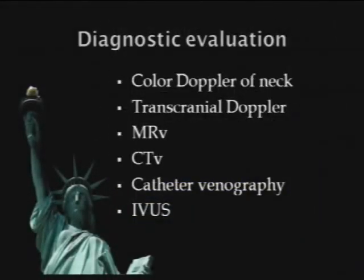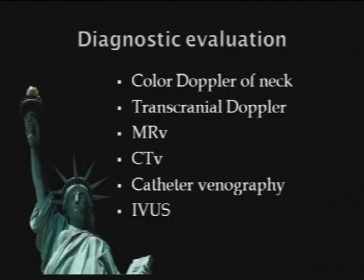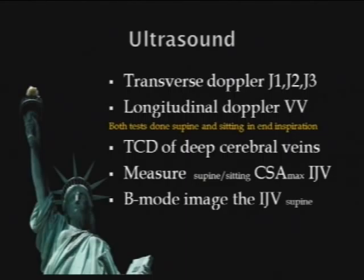We now need to make a diagnosis. The standard ways are by Doppler — a hemodynamic study of the neck — and transcranial Doppler to look at deep cerebral veins. MR venography and CT venography provide axial, cross-sectional, and multi-formatted imaging of the veins. Catheter venography is our typical, standard, and probably most reliable way to evaluate venous anatomy. And intravascular ultrasound I've found to be quite helpful in certain circumstances.